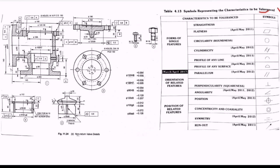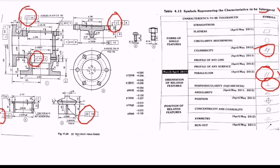This is the tolerance symbols table, showing important geometric tolerance symbols. In this figure, we have the parallelism symbol (two parallel lines), the cylindricity symbol, and the perpendicularity symbol. Cylindricity indicates a cylindrical object; parallelism means two lines should be parallel; perpendicularity means the two lines are at 90 degrees to each other. These three symbols — cylindricity, parallelism, and perpendicularity — are used in this non-return wall.